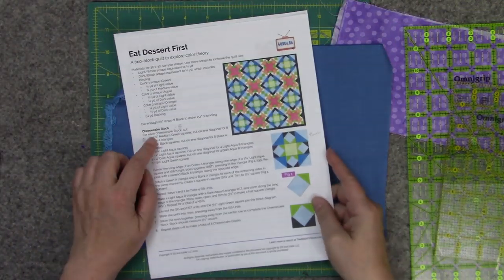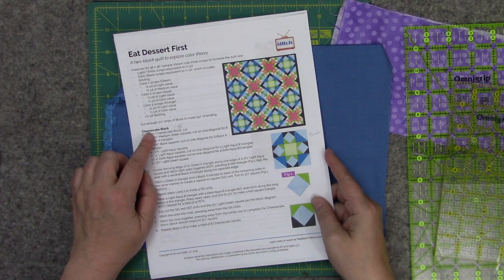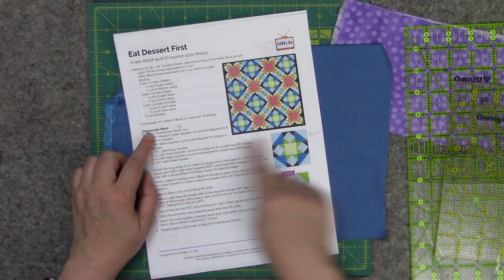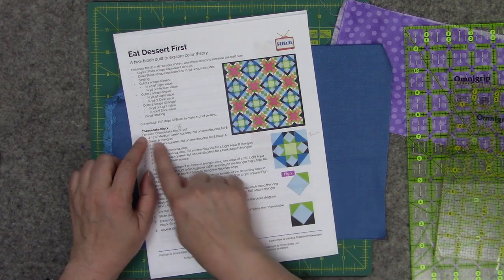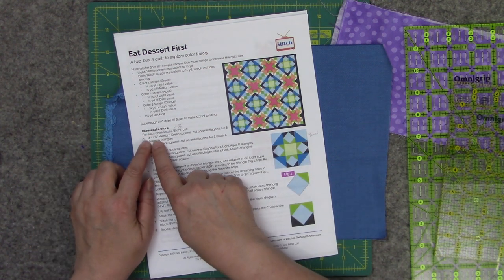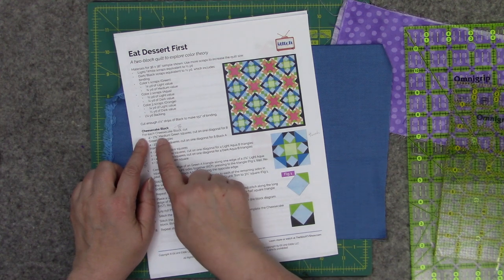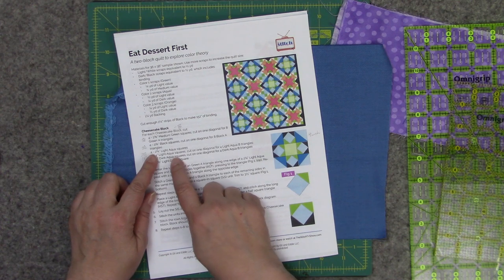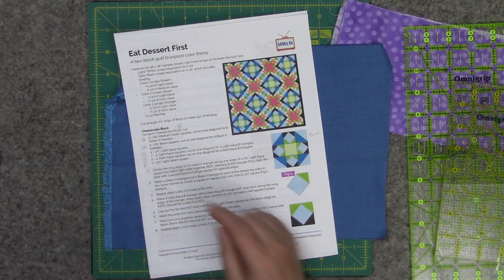One of our patterns that we just did is one of those color lectures that Pam and I did. This is the second block in the lecture called the cheesecake block, and in it you need squares that are two and three-eighths, and you also need one that is two and five-eighths.